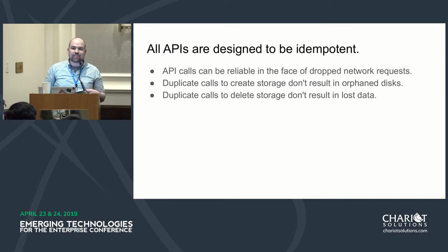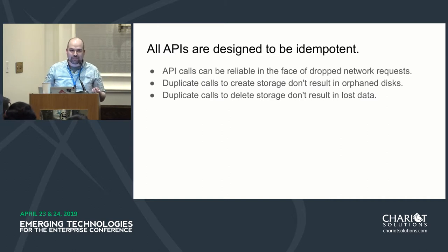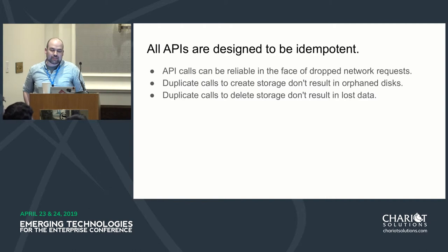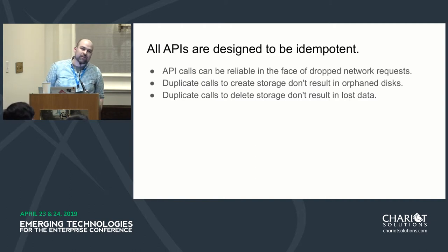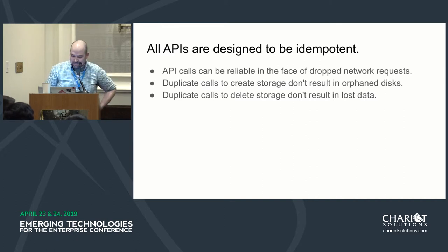This means you can keep saying 'create A' and it will only create A. It won't create B, C, D, E, F — we call those orphans. There are no orphans in CSI. And duplicate calls to delete will not delete things you don't expect to be deleted, because you're saying 'delete A' — it won't delete B or C or D.